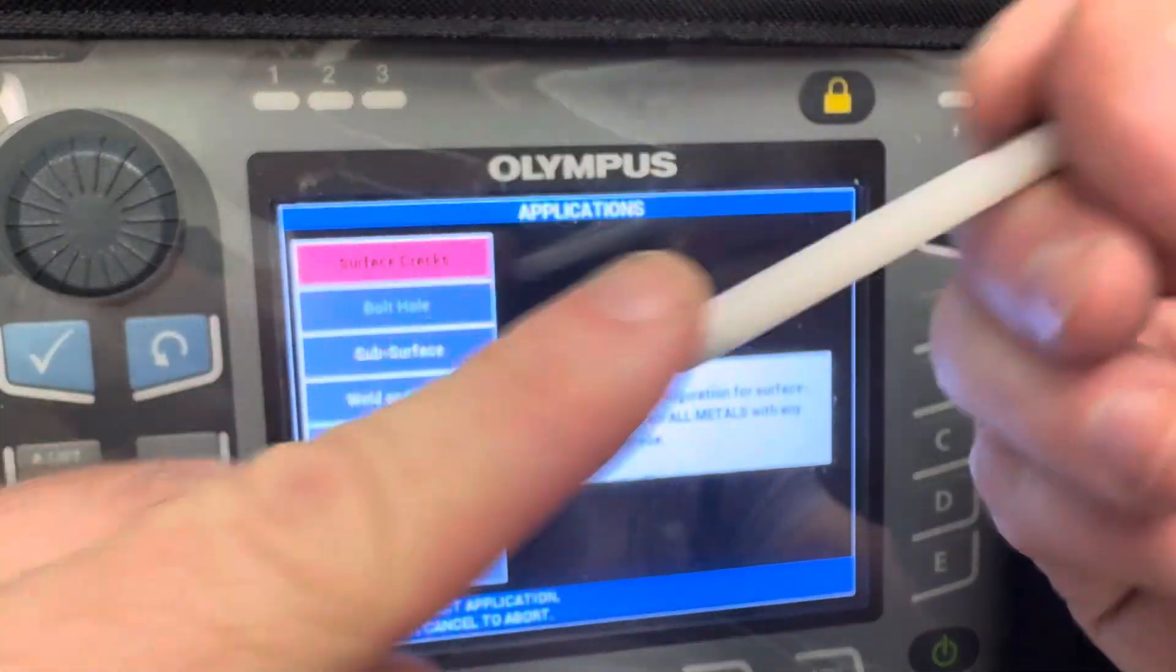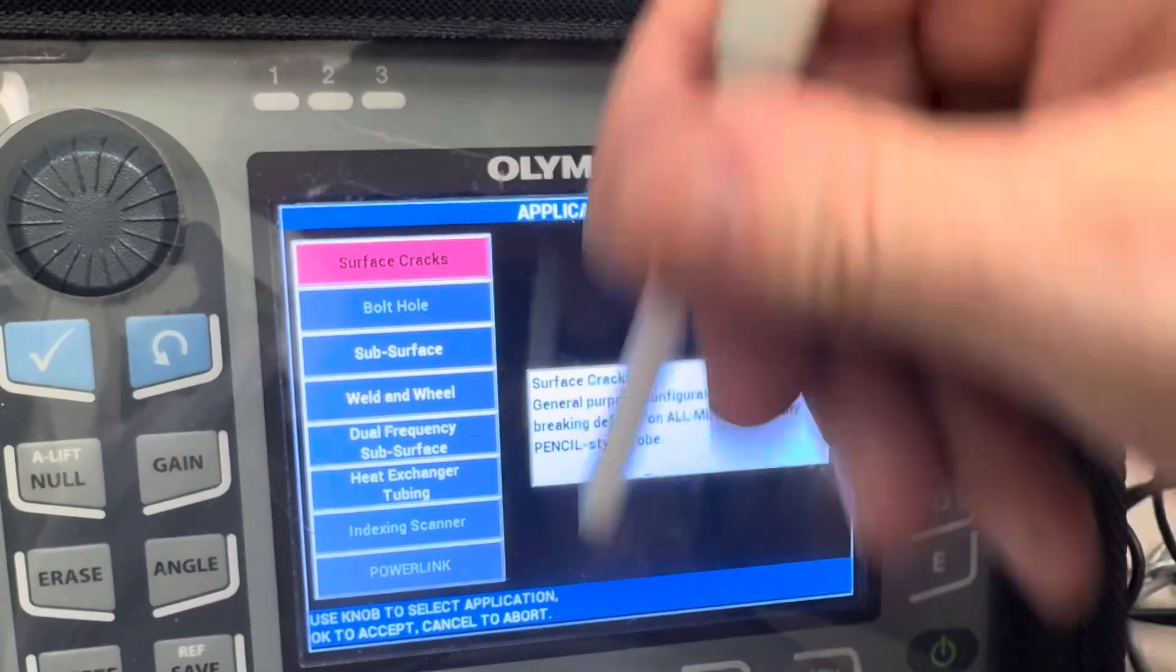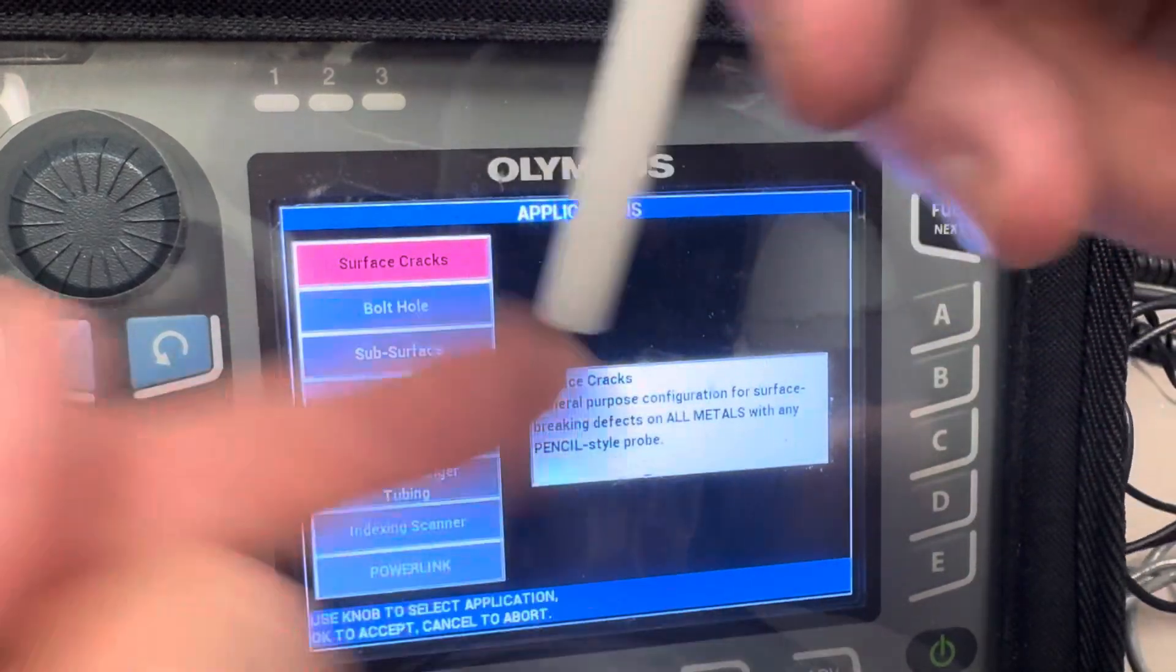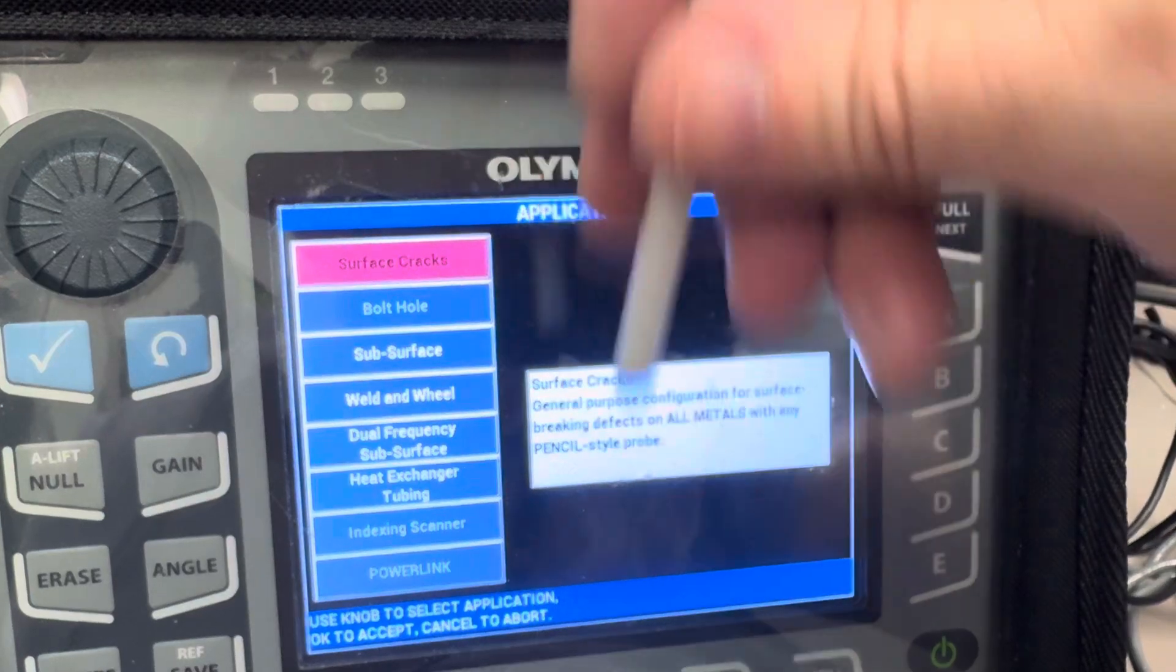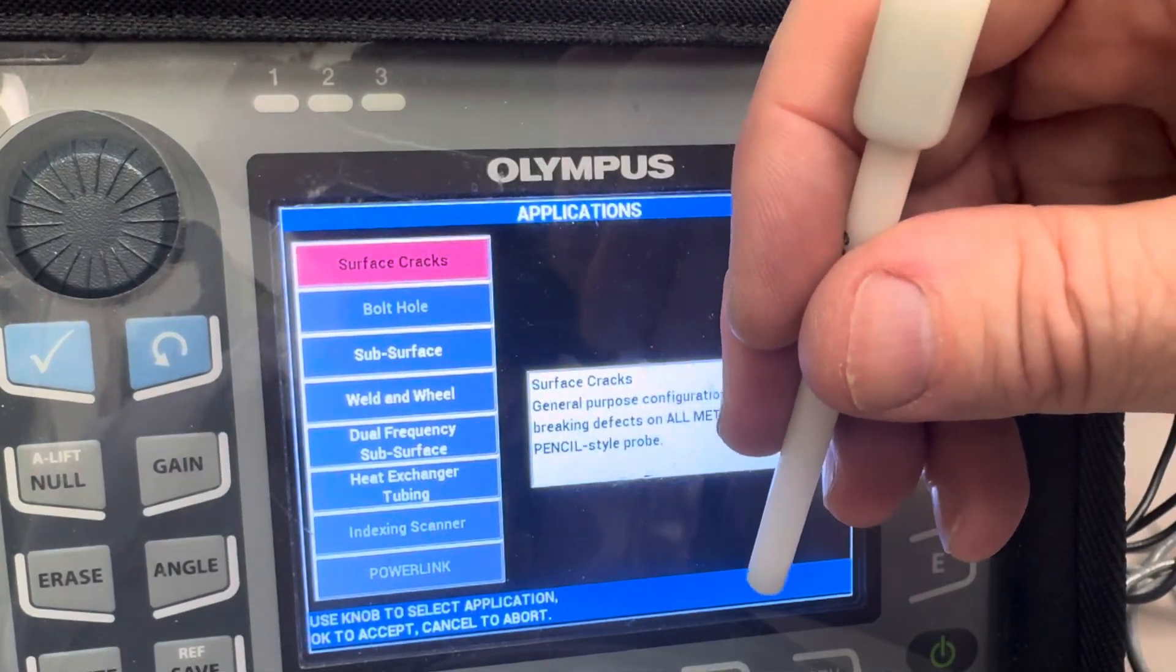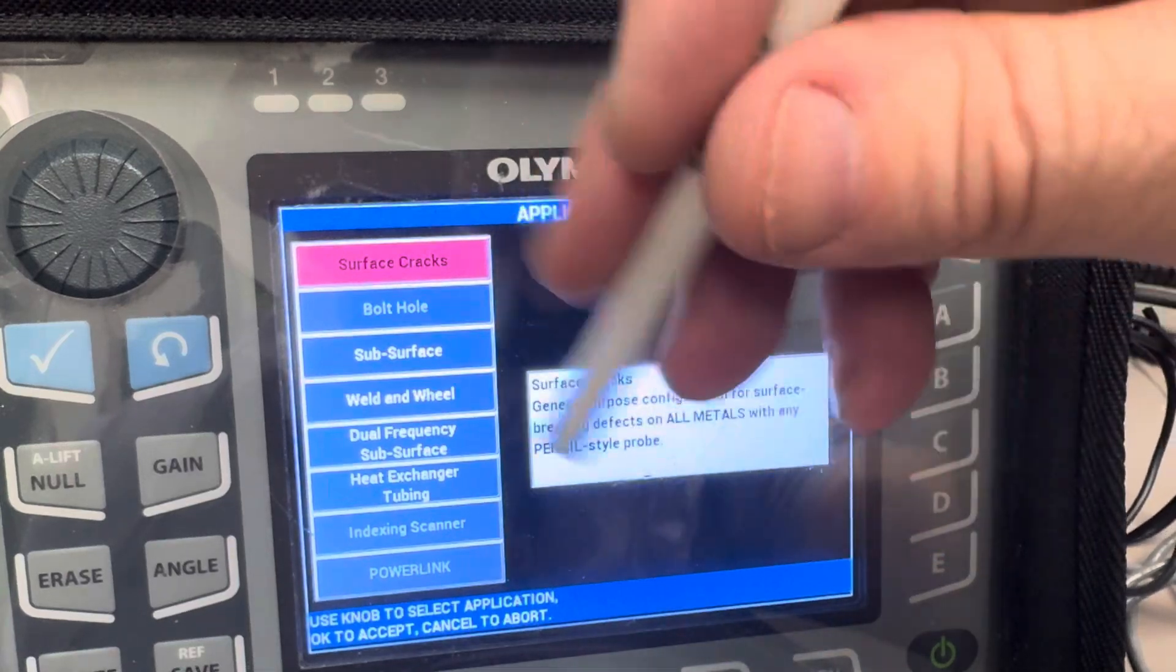With the pancake coil it doesn't matter if you scan this way or that way, just because it's wound in a circle and it's planar. You can scan in any direction, you can still find flaws whether they're axial or transverse. Scan pattern doesn't really matter.